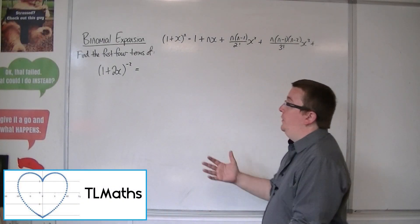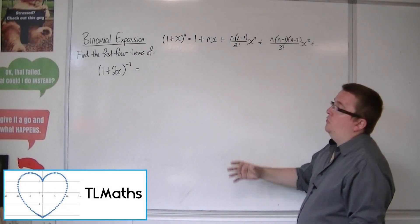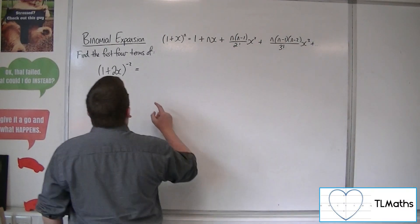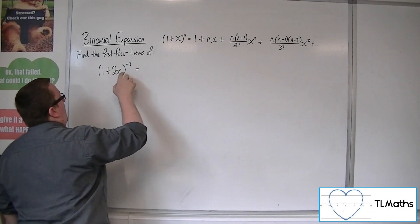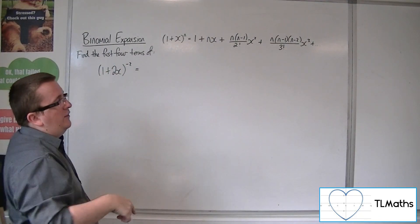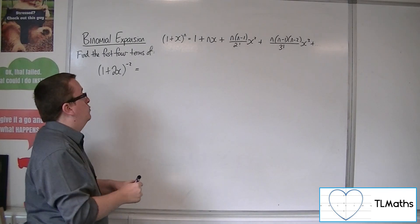OK, so let's say I want to find the first four terms of the expansion of 1 plus 2x to the minus 2. So this time we've got n as minus 2, and we've got the x being replaced with 2x. So each of the x's needs to be replaced with 2x as well.